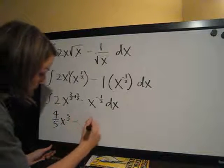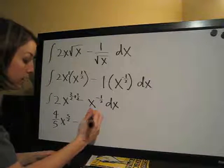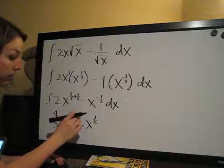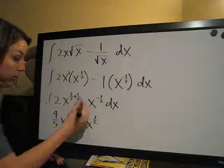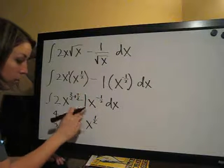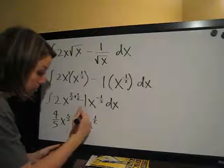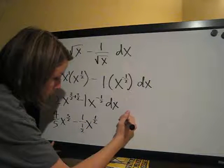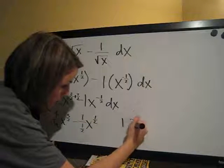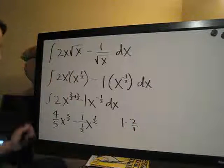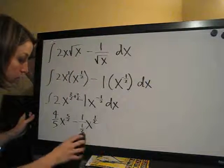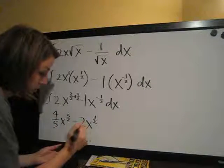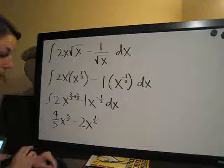Minus x negative 1 half plus 1 is positive 1 half, and then the coefficient divided by the new exponent. The coefficient here implied is 1, so it is 1 over 1 half. 1 over 1 half is the same as 1 times 2 over 1. 1 times 2 over 1 is 2, so we will add, sorry, not add, we will change that coefficient, simplify it, to be 2.